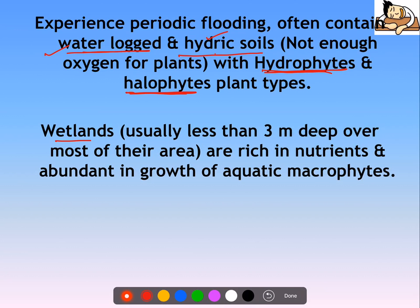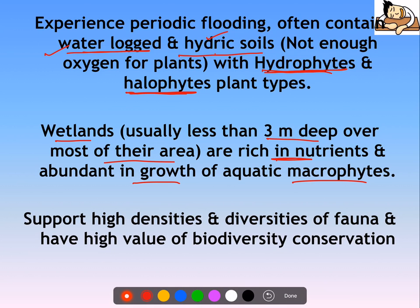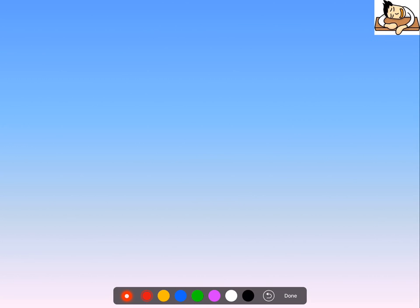Wetlands are usually less than 3 meters deep over most of their area. They are rich in nutrients and abundant in growth of macrophytes — aquatic macrophytes grow in abundance there. They support high density and diversity of flora and fauna and have high value for biodiversity conservation, with a lot of biodiversity existing within them.